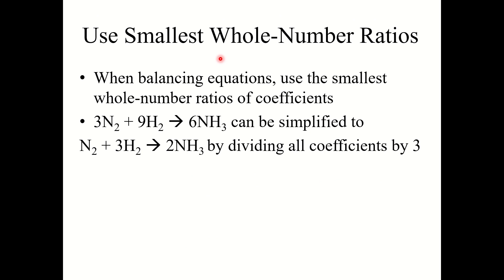One thing I also want to mention is you must use the smallest whole number ratio. When you balance equations, make sure you are using the smallest whole number ratios as coefficients. For example, if you balance the reaction of nitrogen gas plus hydrogen gas to form ammonia and end up with coefficients all divisible by three, divide them all by three. The final answer would be 1N2 plus 3H2 forms 2NH3.